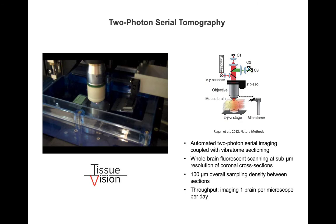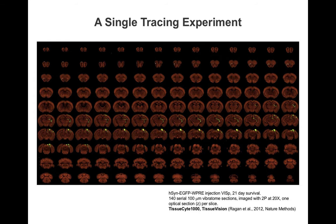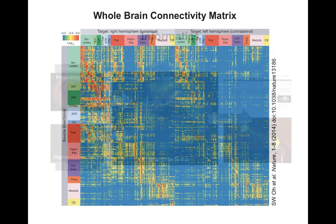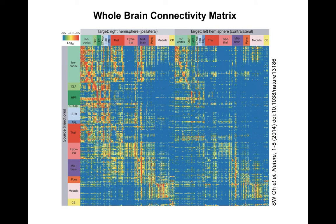A single experiment captures 140 coronal sections in two channels: the red channel, which captures background fluorescence, and the green channel, which captures the signal from the green fluorescent protein. Similar to the mouse brain atlas informatics, the data is registered into the three-dimensional reference space called the common coordinate framework and represented as computational pathways. This automated informatics process allows for some unique visualization and analytic features, such as being able to map out a connectivity matrix across the entire brain.